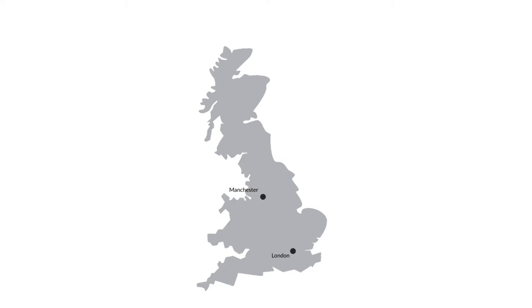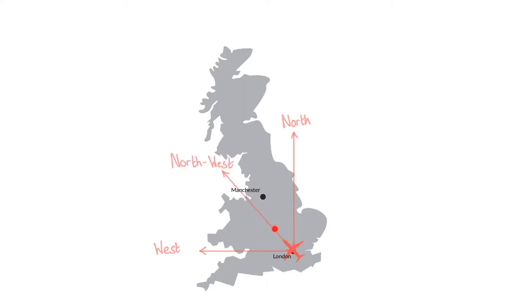In this video we are looking at bearings. We can use bearings to work out what direction to travel in to get from one point to another. Imagine you are a pilot and you want to fly from London to Manchester. You can't just say it is north or west, because travelling in either of those directions you will miss Manchester. It's not quite north-west either, because you'd fly close to Manchester but still miss it. So it would be helpful to use numbers and angles to be more accurate. This is where bearings come in.